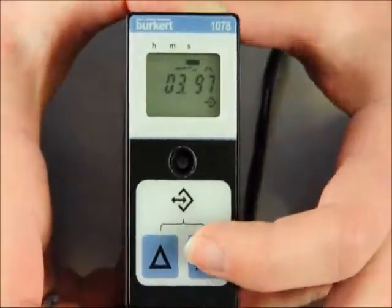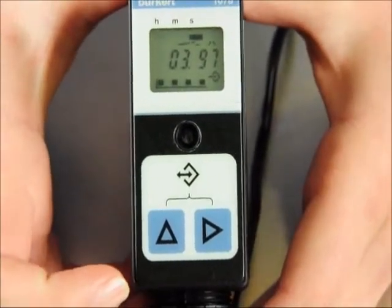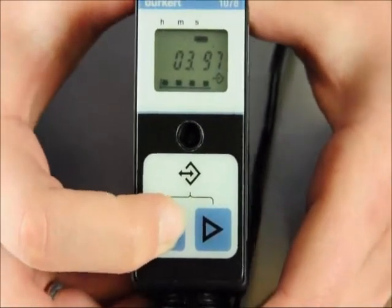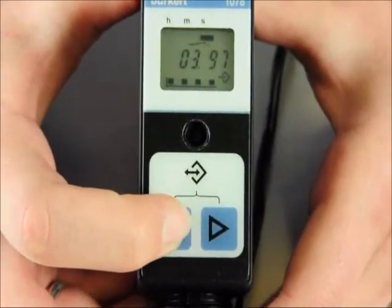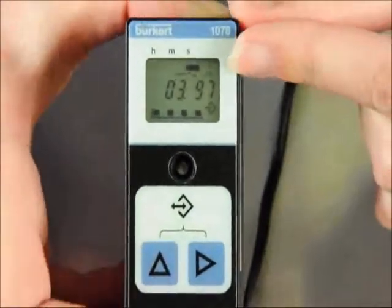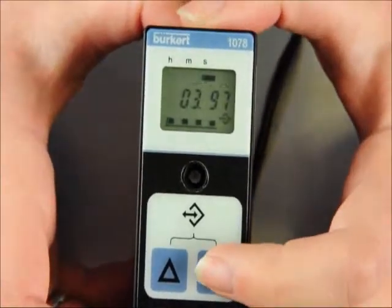Press the right arrow key to move to the next setting and choose the operating mode. Using the up arrow, cycle through the options and choose the option with the following graphic. Press the right arrow key to go to the next setting.